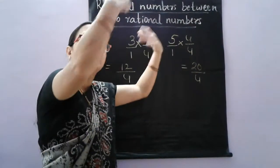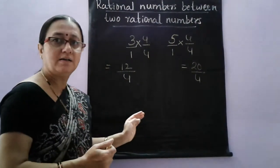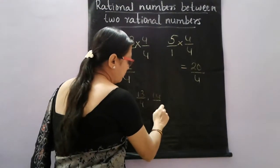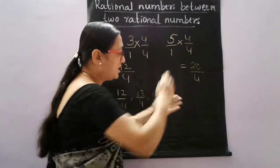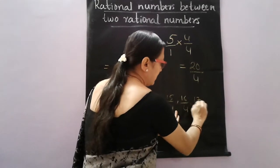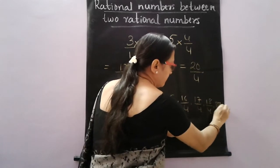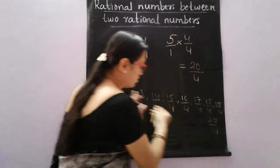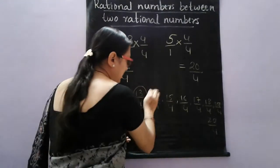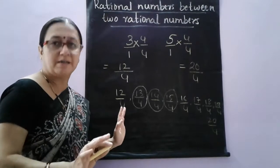Now this equals 4 × 3 = 12 by 4, and this equals 5 × 4 = 20 by 4. So we have expanded 3/1 to 12/4 and 5/1 to 20/4. Now can you find the numbers in the middle? 12 by 4, 13 by 4, 14 by 4, 15 by 4 — and we can continue: 16 by 4, 17 by 4, 18 by 4, 19 by 4, and 20 by 4. So many rational numbers between these two! Out of these, any three we can take.